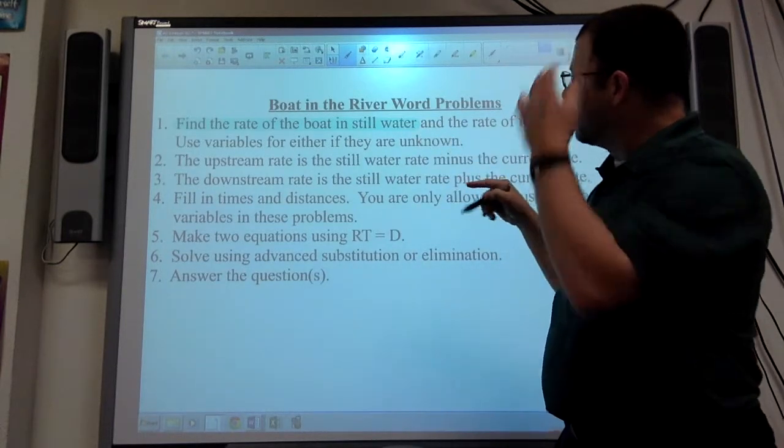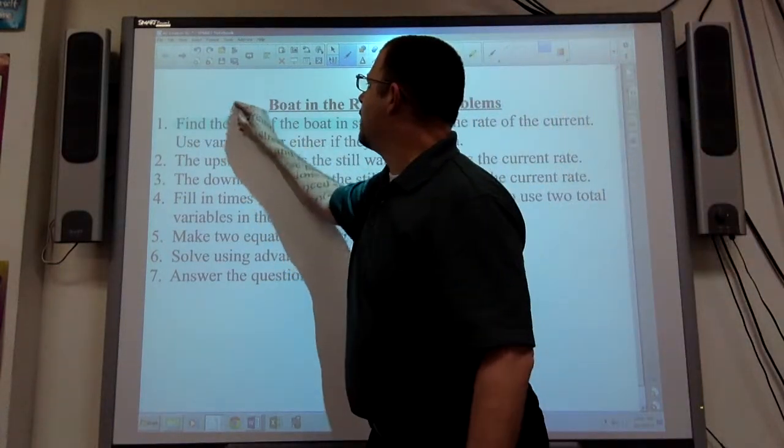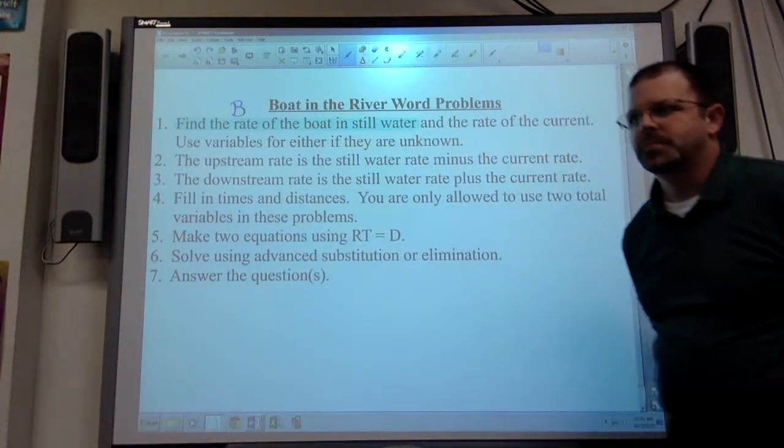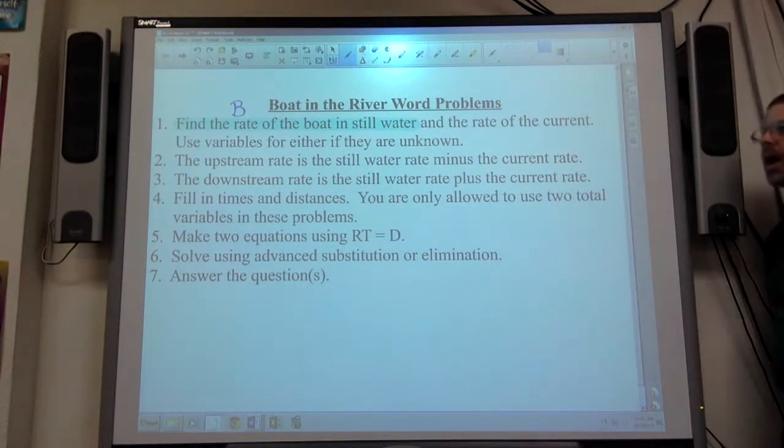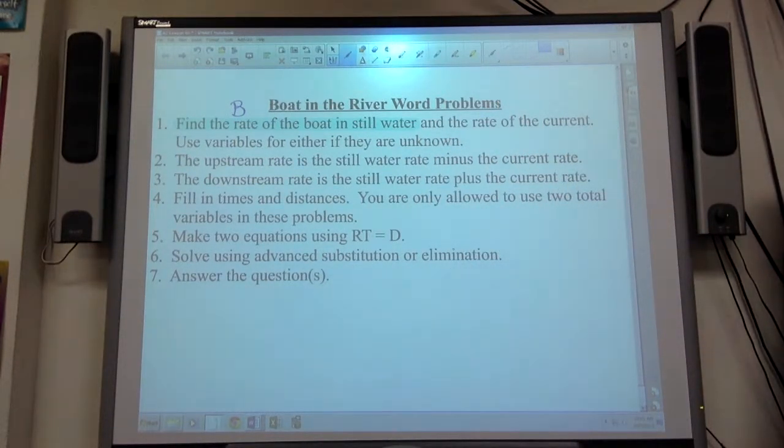For the sake of what we're going to use these for, let's just represent the rate of this boat in still water by the letter B. If they tell you what B is, that's great. If they don't, that's fine too. But that's one of the things you want to find before you start working these problems out. What does B equal?